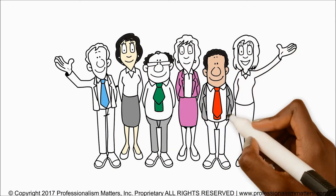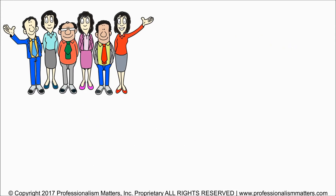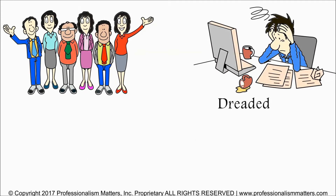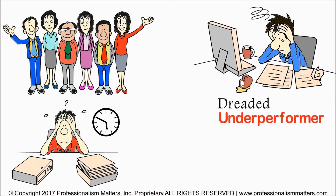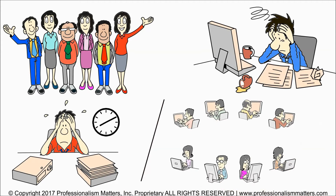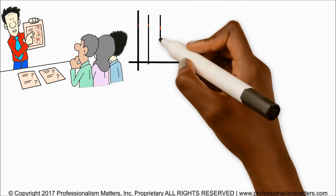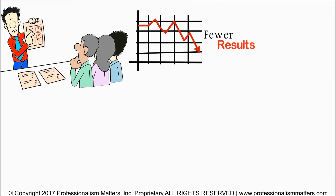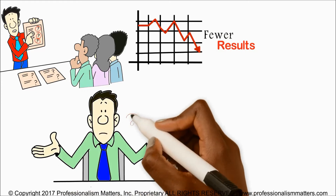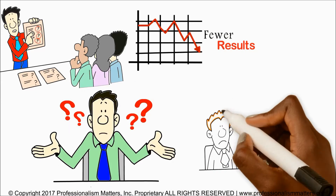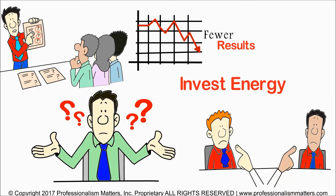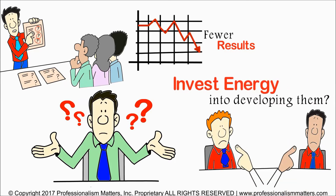Virtually every team leader or executive has at least one — the dreaded underperformer. That one person who takes up five times as much of your time as anyone else on the team. They require so much more attention and produce far fewer results. The inevitable question for many leaders becomes how to handle them, or maybe even should I continue to invest energy into developing them?